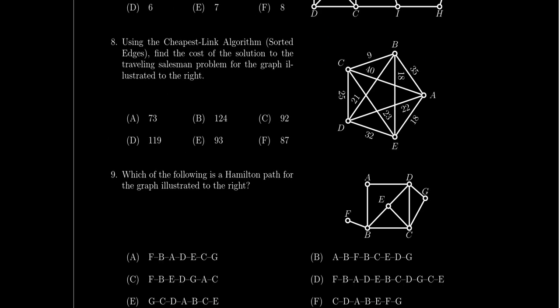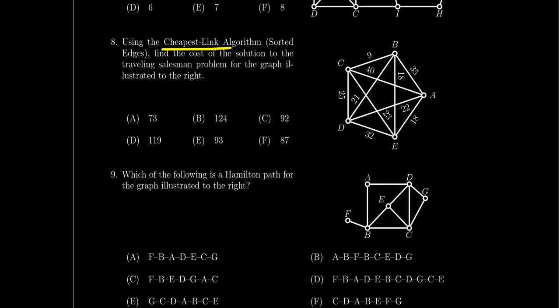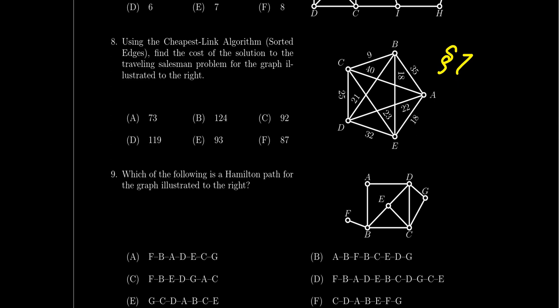Question number eight is similar to question four — you're given a weighted complete graph and asked to solve a traveling salesman problem — but this time using the cheapest link algorithm. You just need to find the cost of the cheapest link tour; you don't need to write out the full Hamilton circuit. Be careful not to use nearest neighbor here, as it might give a different answer. Cheapest link was introduced in lesson seven.